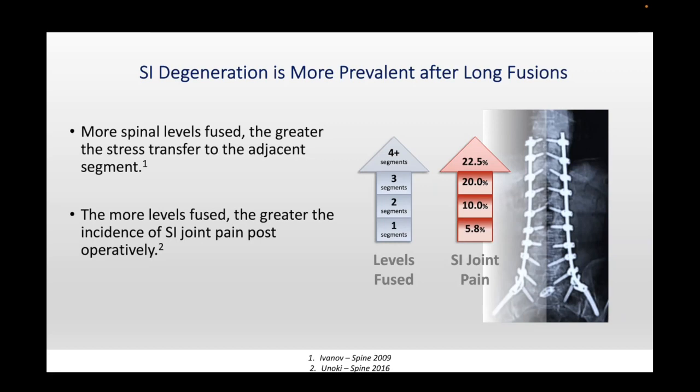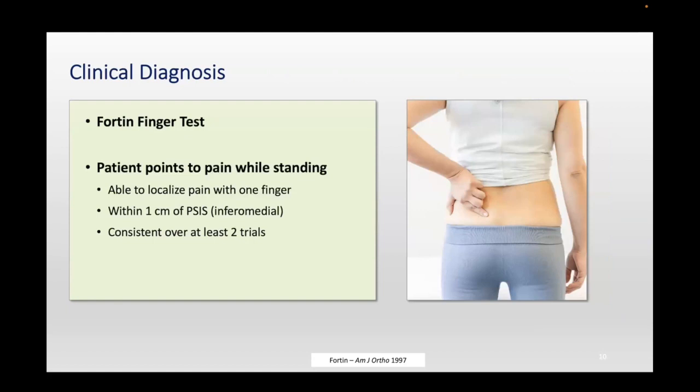How do we diagnose it? History and physical is almost everything. Patients need to have one of those risk factors — very rarely have I seen somebody without any risk factors having true SI joint disease. In the physical examination, one of the most important tests is to ask them to point with one finger to the epicenter of the pain.